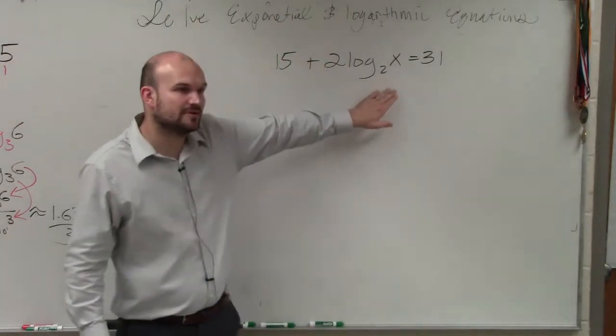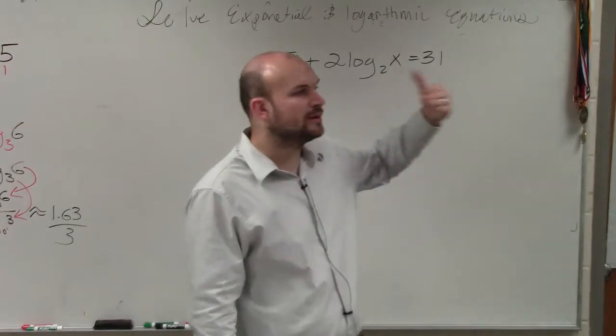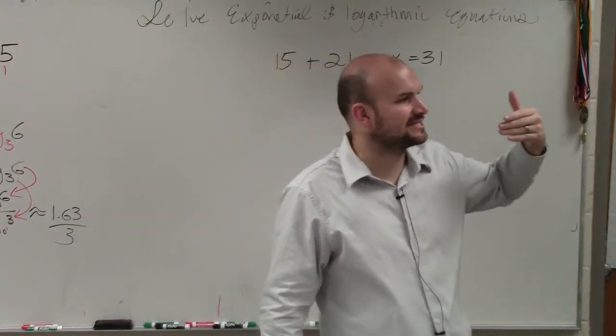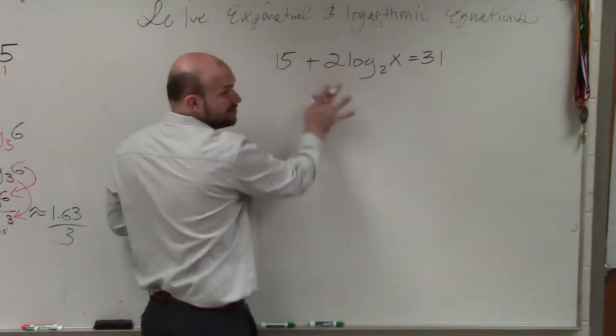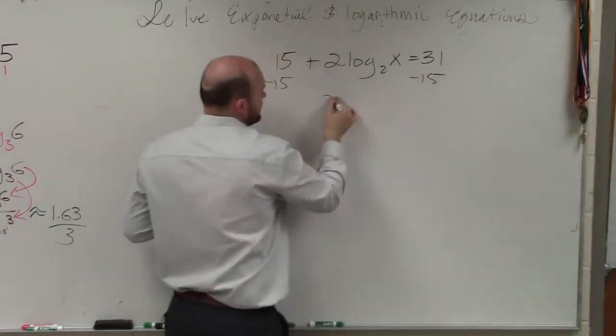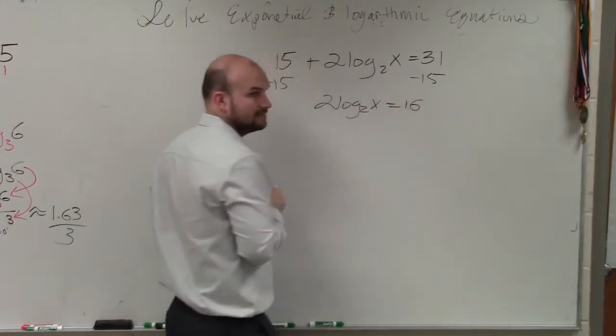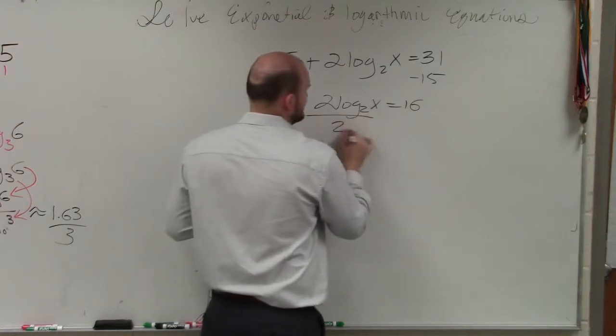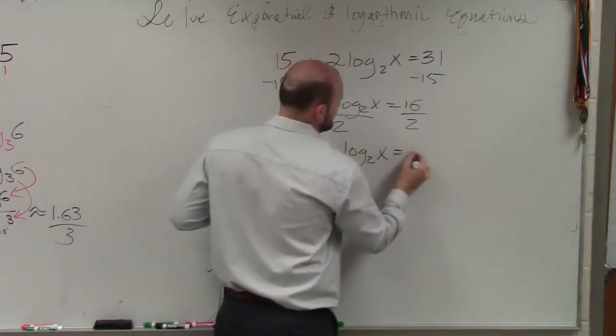Now we have a logarithm equation, or a logarithmic equation. So the first step you're going to want to do for this is exactly the same as the exponential. Isolate your log. So we undo our operations. First thing is subtract the 15 on both sides. Therefore, I have 2 log base 2 of x equals 16. Then the next thing is divide by 2, and I have log base 2 of x equals 8.